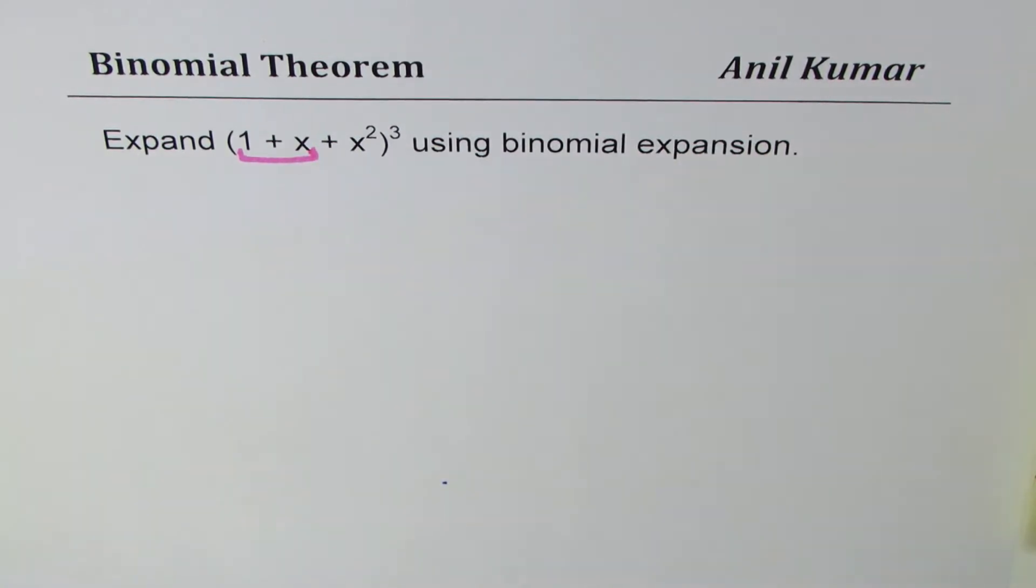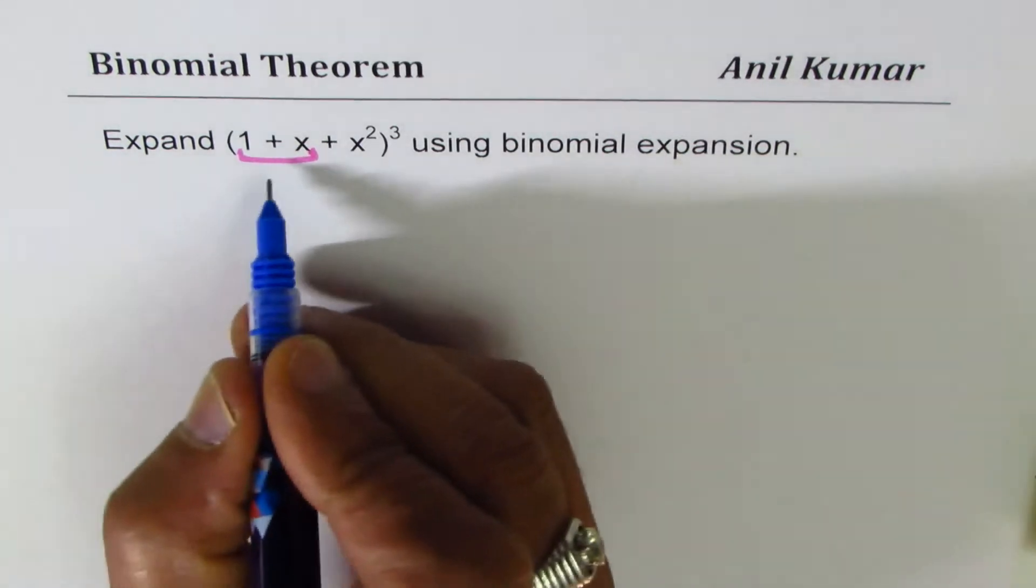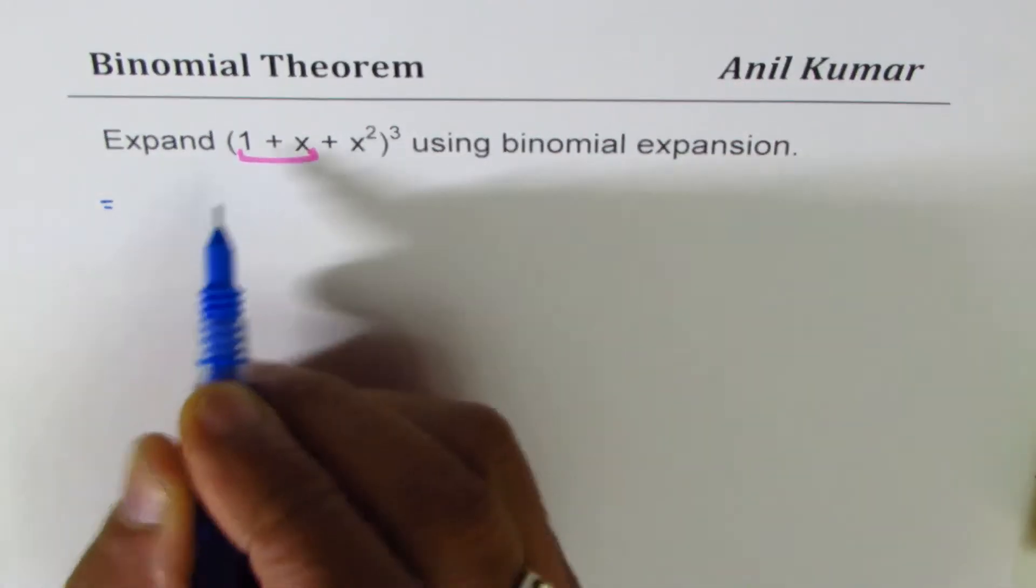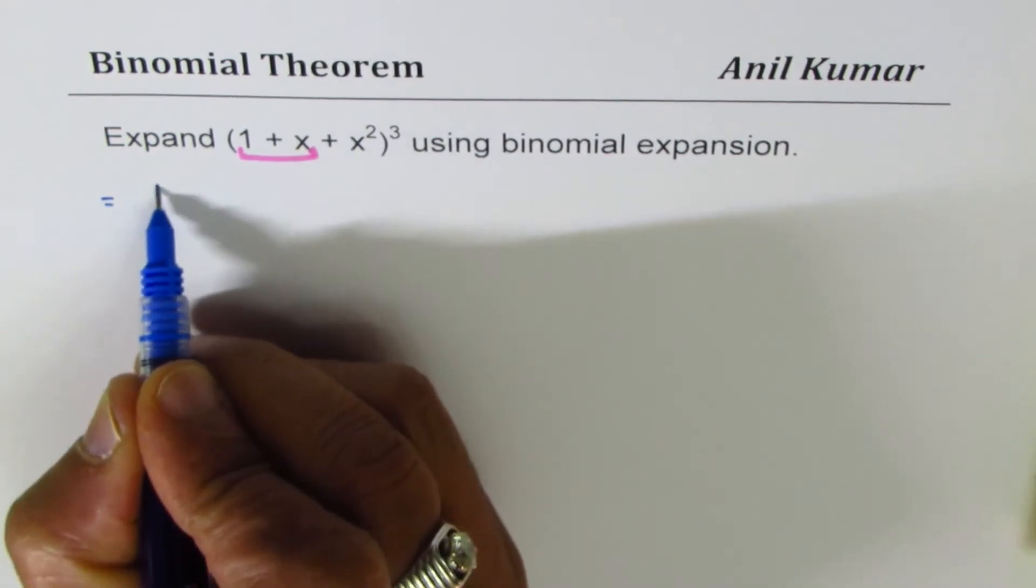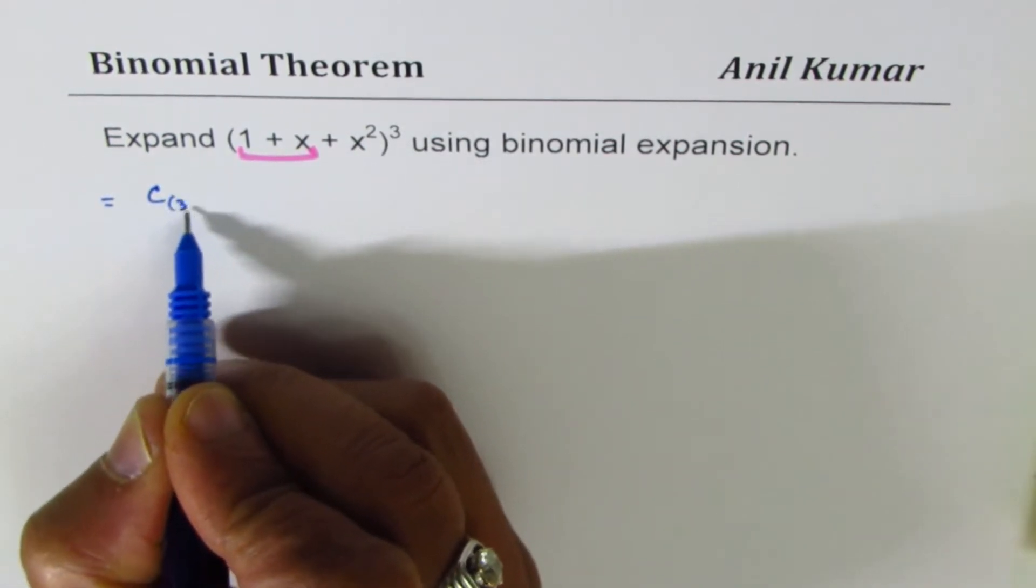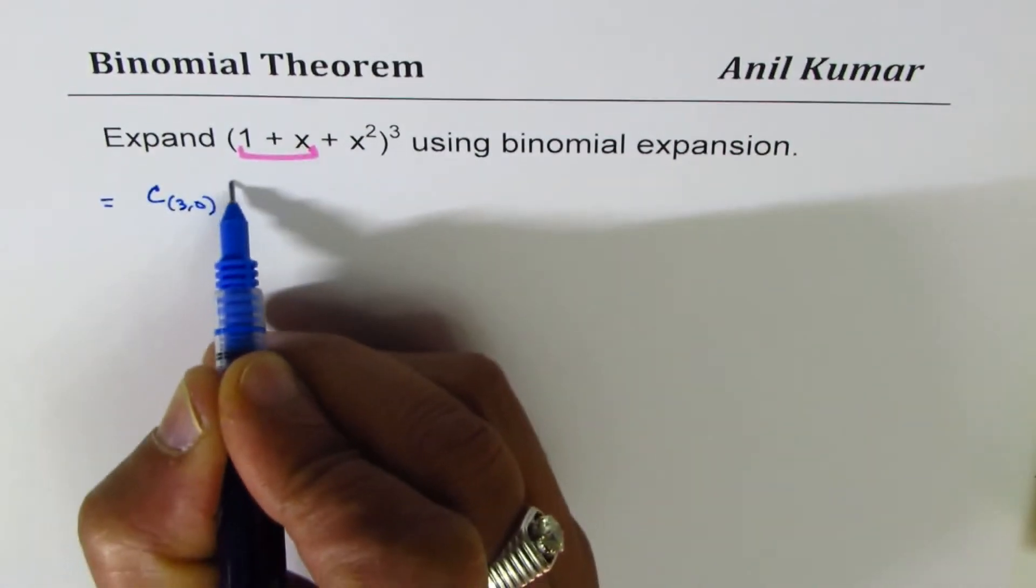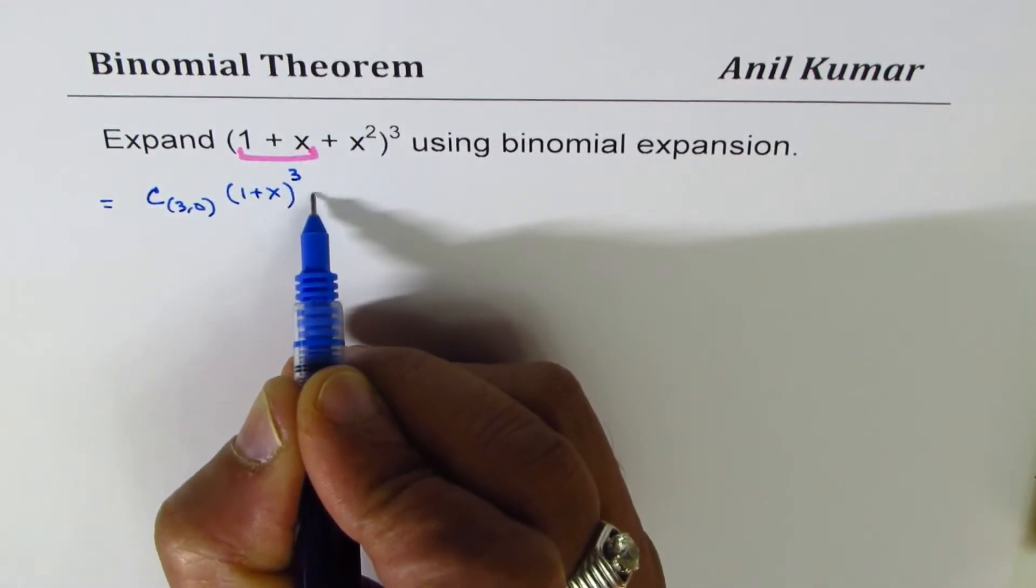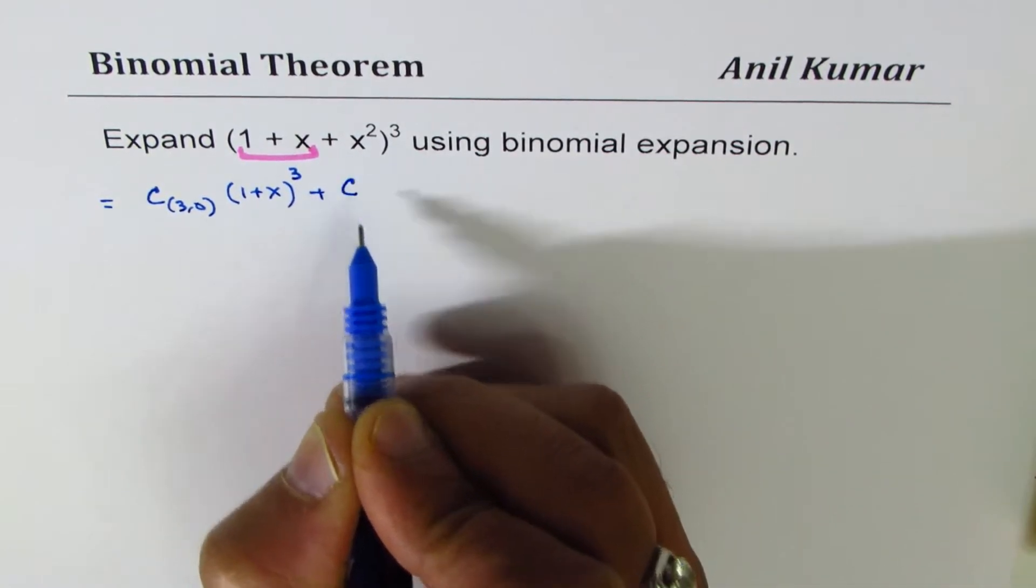So it could be written as treating this as the first term: C(3,0)(1 + x)³ plus C(3,1)(1 + x)²(x²)¹